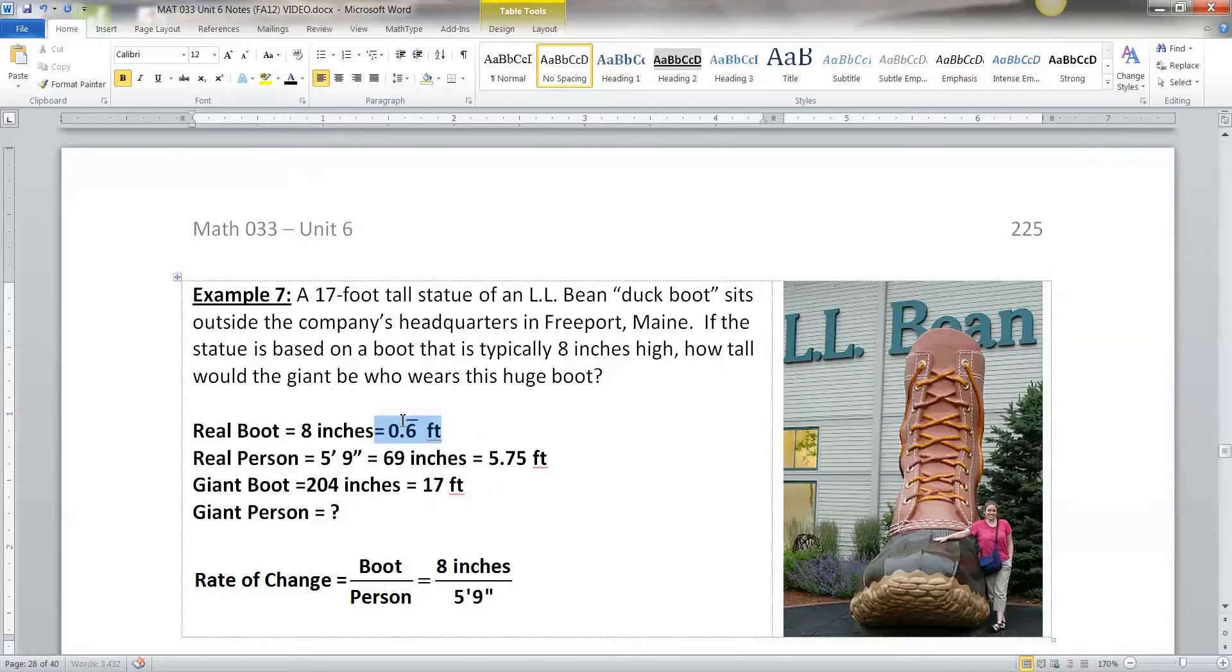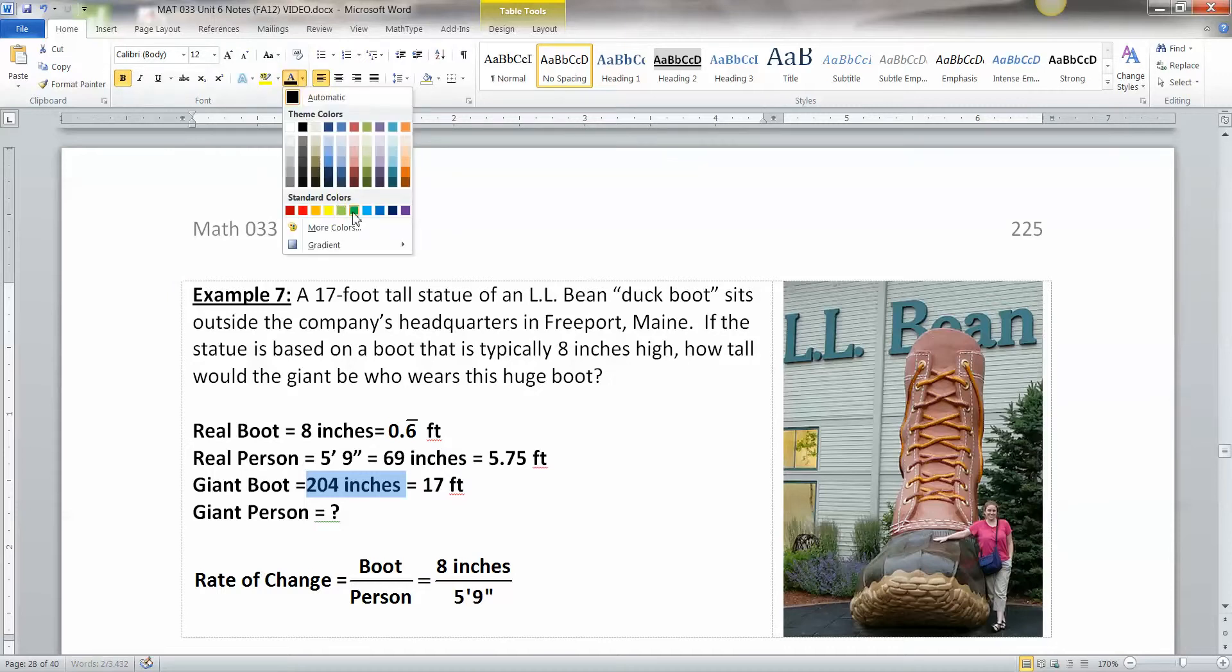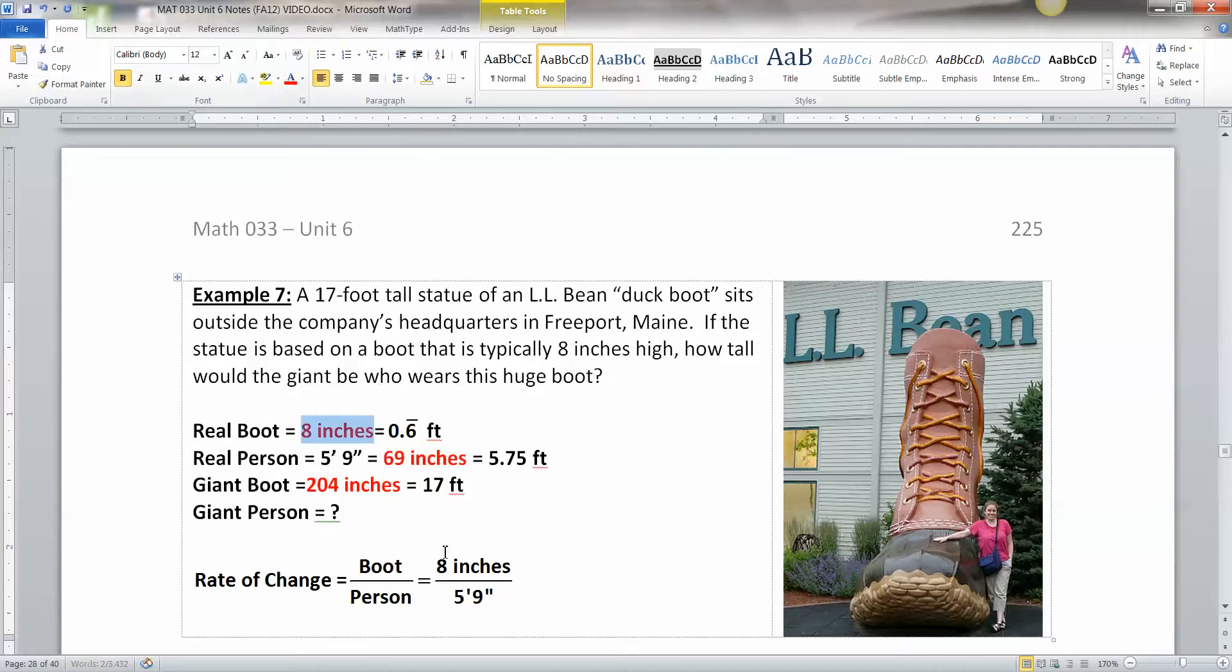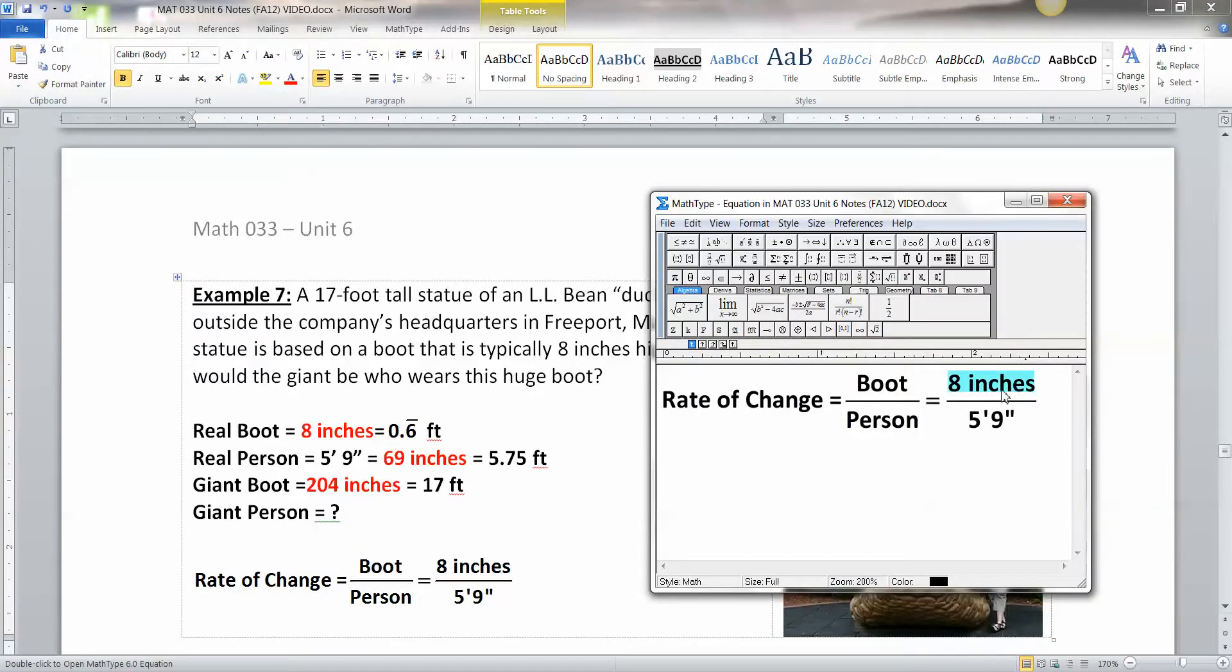Cool. All right, so notice you have a choice, right? You can either use feet, feet, feet, or inches, you know, and I'll separate these a little bit. I'll put inches in red. So inches, inches, inches, right? We got to use it one grouping or the other. So either the feet or the inches. I'm betting you guys can probably handle inches because they're whole numbers. I'm going to use the decimals just for fun. So the boot for me, the real person, was 0.6 repeated, right? 666666, like that. And then the person, me, 5.75, right? So that's feet over feet.